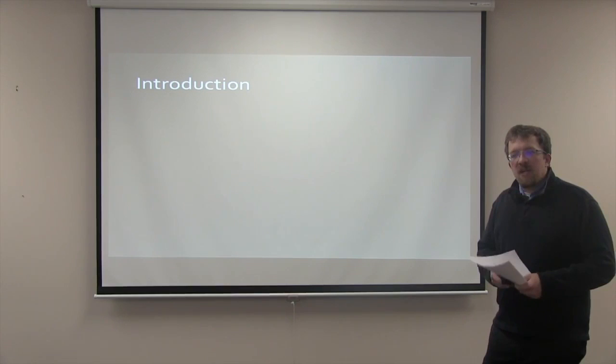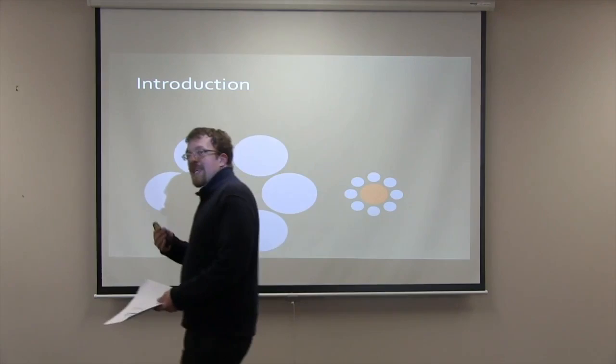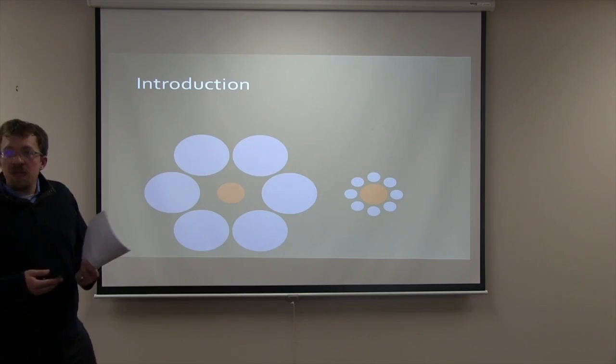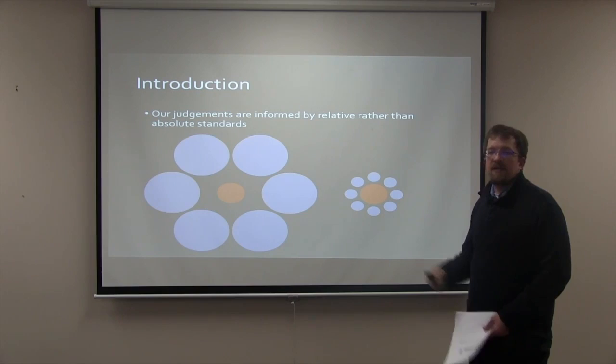To further demonstrate that people's evaluations are heavily influenced by the surrounding stimuli, we can look at a commonly used circle illusion within psychology. Despite these orange circles being the exact same size, the circle on the right looks much larger than the circle on the left. This is because we tend to judge circles as being smaller when they are surrounded by larger circles. The takeaway is that our judgments are informed by relative rather than absolute standards.